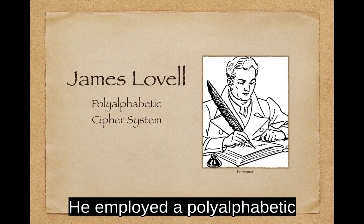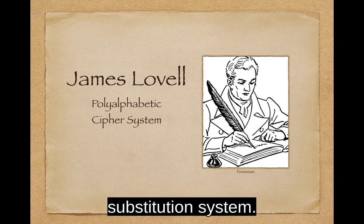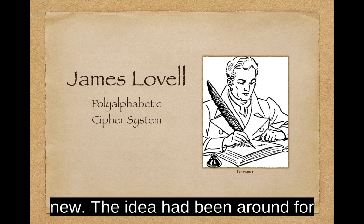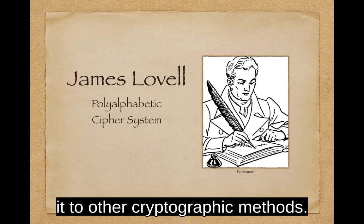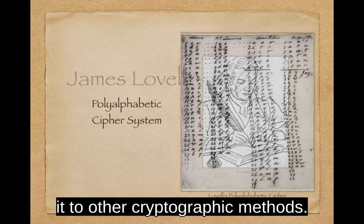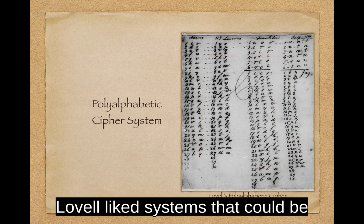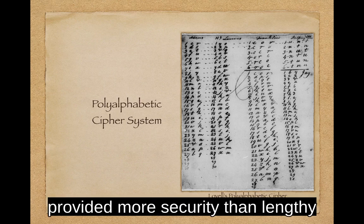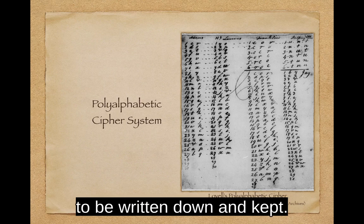He employed a polyalphabetic substitution system. Polyalphabetic substitution was not new — the idea had been around for centuries — but Lovell preferred it to other cryptographic methods. Lovell liked systems that could be committed to memory, as they provided more security than lengthy code books or lists that had to be written down and kept.